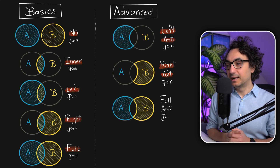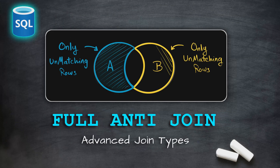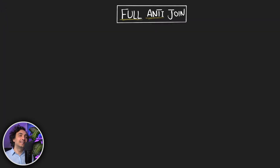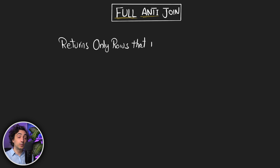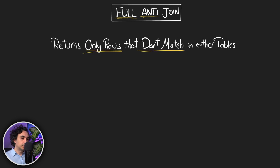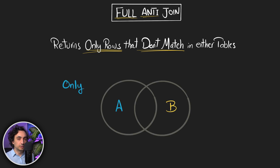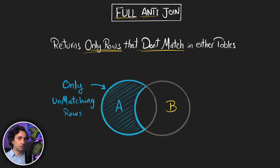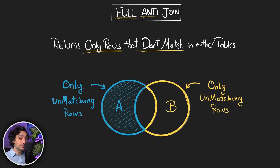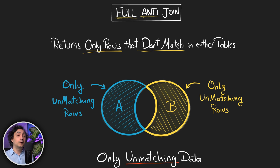Now we have the left and right, so what's next is the full anti-join. A full anti-join returns only the rows that don't match in either table. From the left circle we want only the unmatching rows — data in A that doesn't exist in B — and from the right table we want only the unmatching rows — data in B with no match from A. This is exactly the opposite of the inner join: instead of matching data, we want all unmatching data.